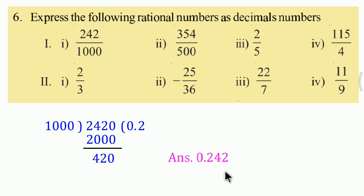This is called a terminating decimal. In decimals, there are terminating decimals and non-terminating decimals. Non-terminating recurring decimals also exist. When after some steps the division stops - there is a quotient and a remainder of zero - those values are called terminating decimals.